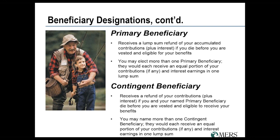Your primary and contingent beneficiaries only come into play if there's a refund of member contributions due and both you and your survivor beneficiary are no longer living. Your primary beneficiary would be first in line to receive that refund, and contingent beneficiaries only come into play if all primary beneficiaries have passed away. If you have multiple children and want them to equally split any benefit, you would want to make them the same designation rather than making one primary and one contingent.